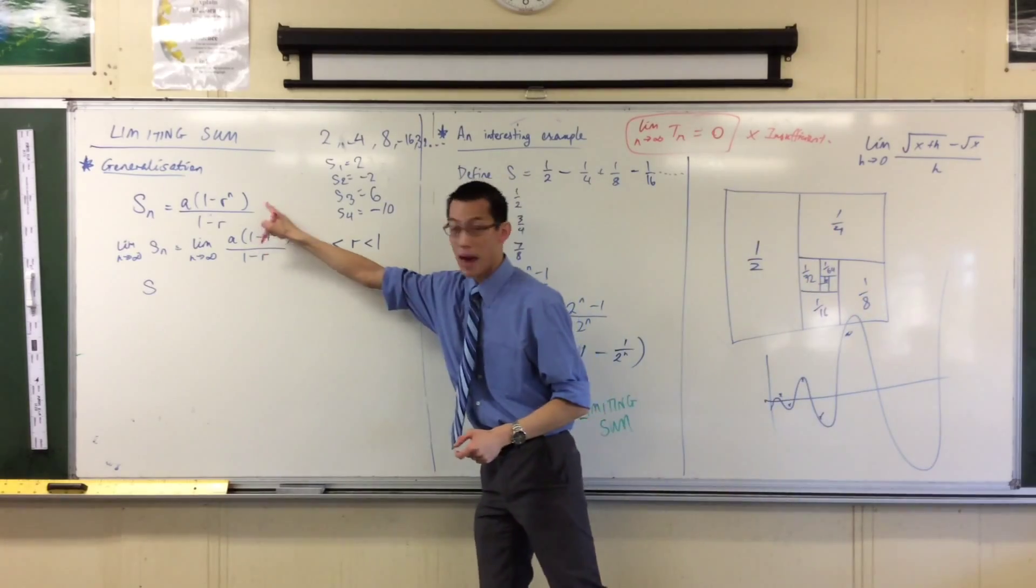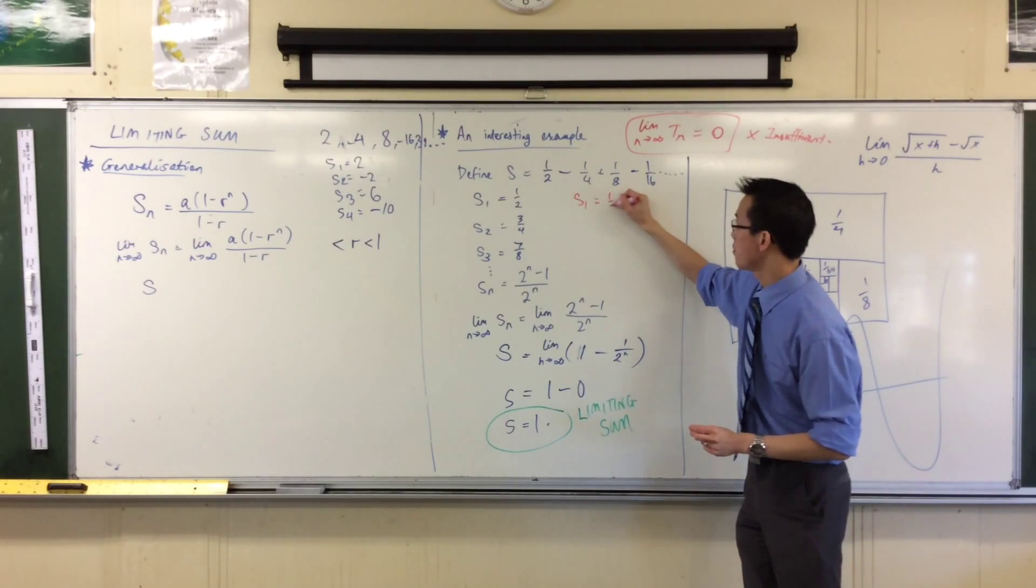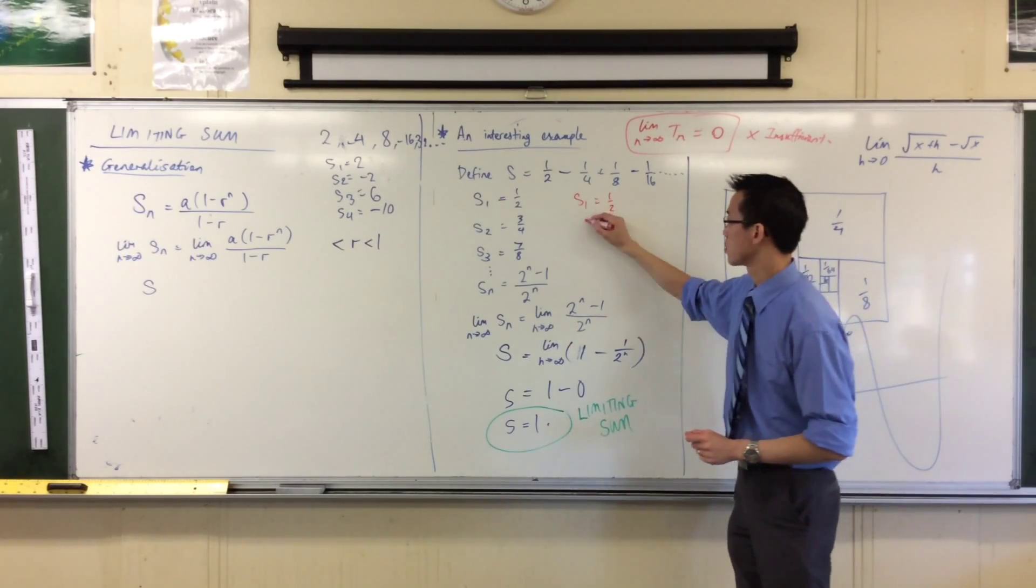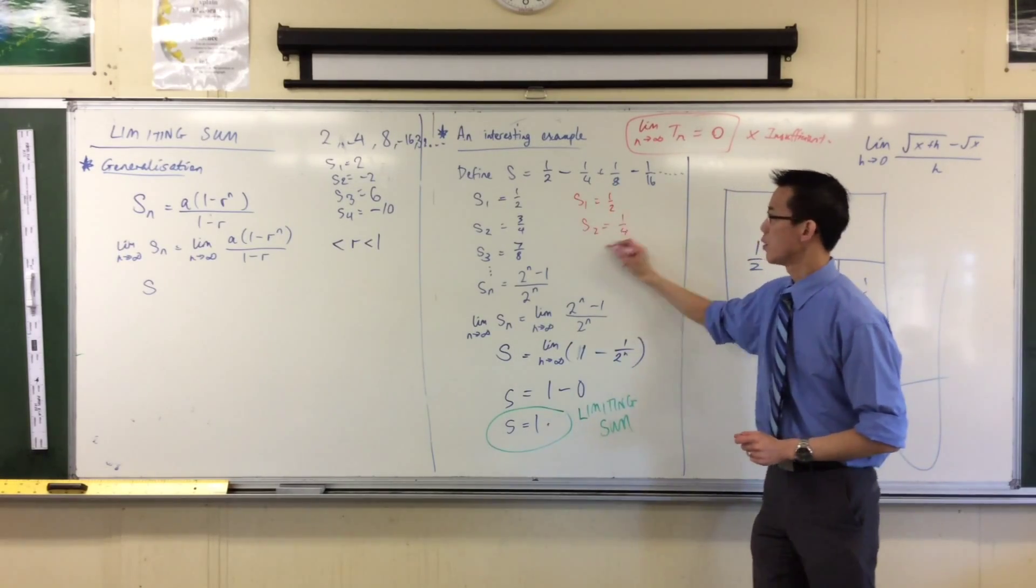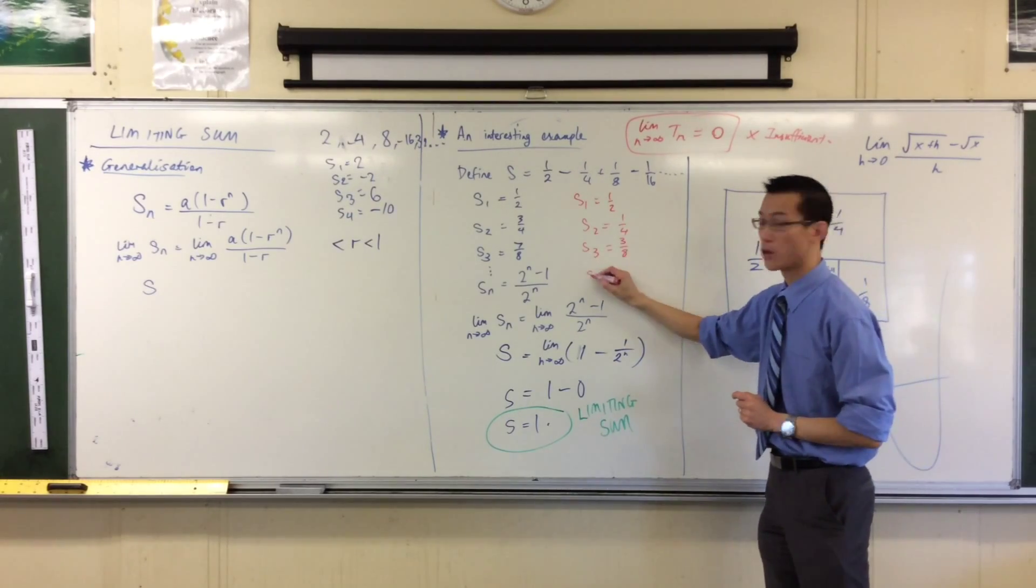This is all about partial sums and what their limit is, okay? So, first partial sum, the same. What's the second partial sum? Quarter. Quarter. What's the third partial sum? Three eighths. Three eighths. What's the fourth one?